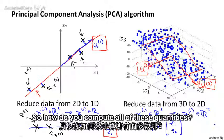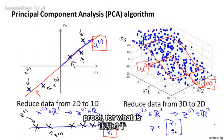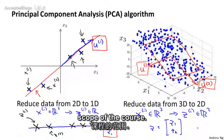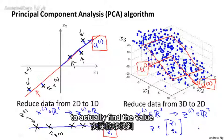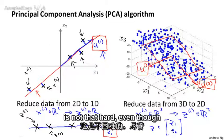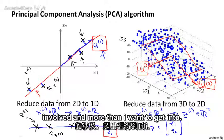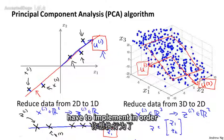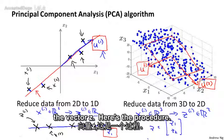So how do we compute all of these quantities? It turns out that the mathematical proof for what is the right value for u1, u2, z1, z2, and so on is very complicated and beyond the scope of the course. But once you've done all that math derivation, it turns out that the procedure to actually find the value of u1 that you want is not that hard. Let me describe the specific procedure you'd have to implement in order to compute all of these things — the vectors u1, u2, and these vectors z.